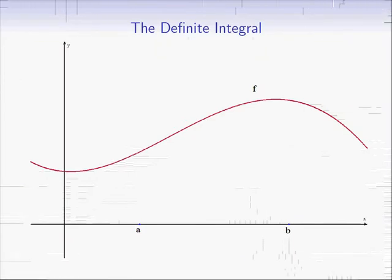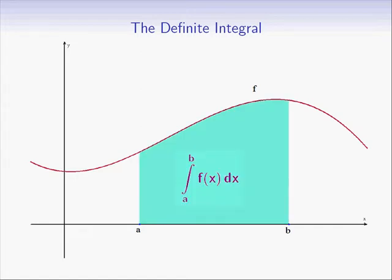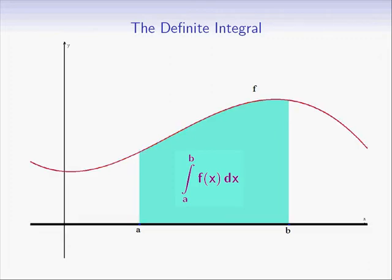Recall that we originally defined the concept of the definite integral for functions defined on a certain closed interval, [a, b], included in their domain. And if our function is positive, like the one we see here, then the definite integral will compute the area of the region bounded by the graph of the function and the x-axis from x equals a to x equals b.